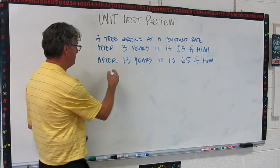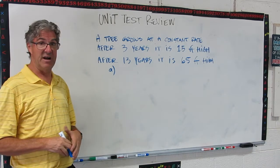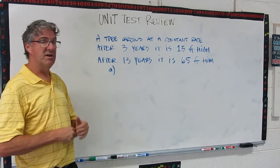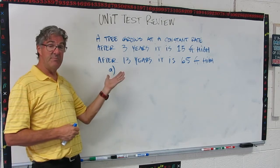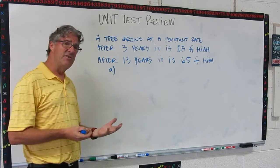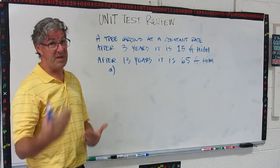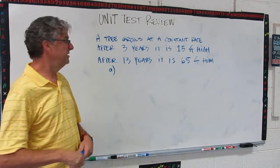So the first question might be, which is the independent and which is the dependent variable? Now, if you remember, time is always independent. So in this case, time would be independent and height would be dependent. And that makes sense because the height of the tree depends on how long it's been growing or the time it's passed. So that would be that.